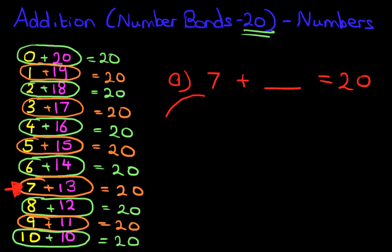It is over here. In fact, I'll just draw the arrow over here. It is here. Now what number added to 7 gives 20? It is 13. 7 plus 13 is 20.